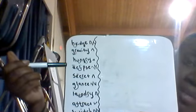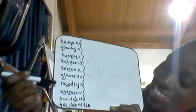So now let's look at our sentences. Today we're going to use our spelling words. Let me go over the spelling words. We're using the same word list, pulling from: bridge, gravity, hungry, eclipse, secret, glance, laundry, attract, switch, and trouble.